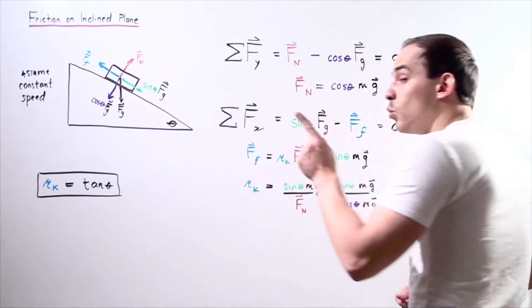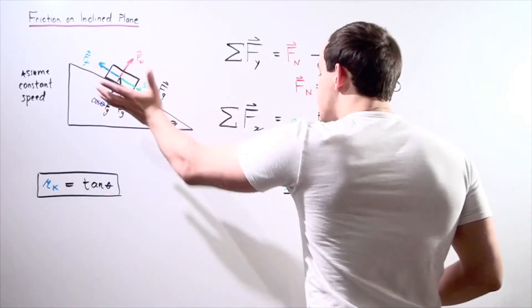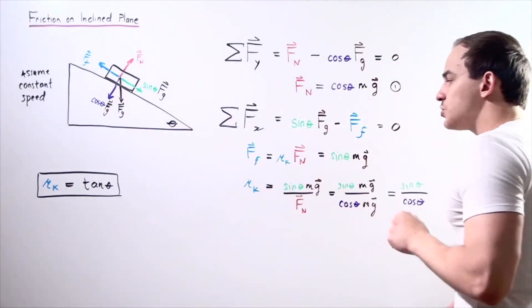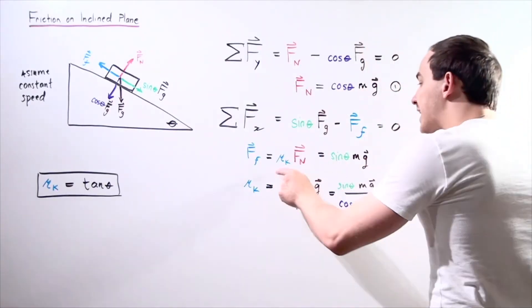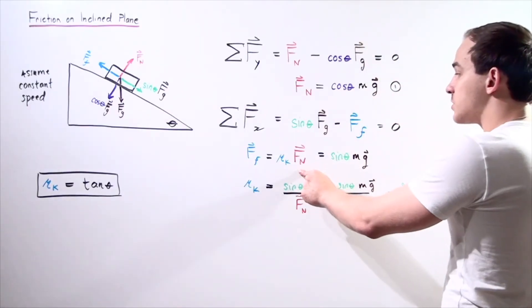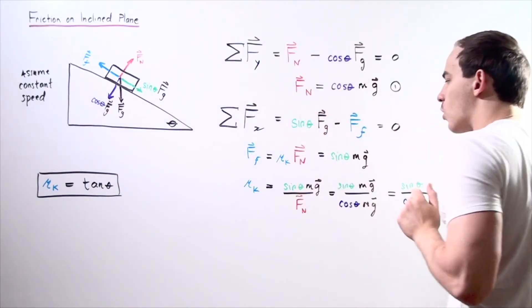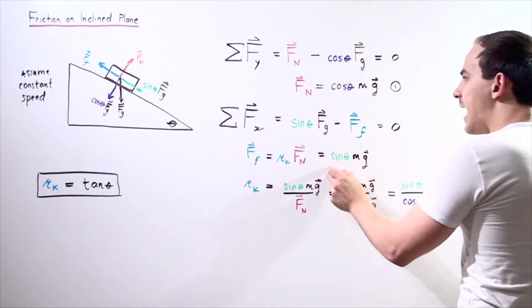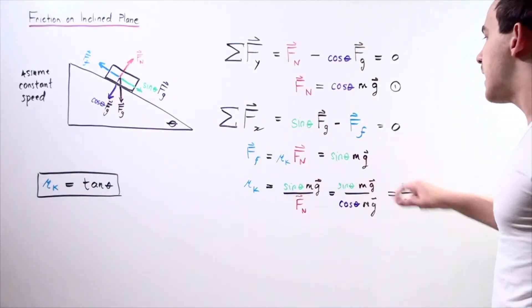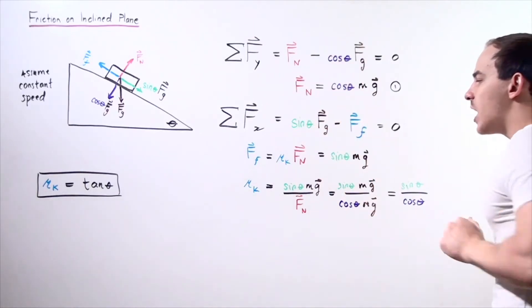The force of friction — because our object is sliding and moving — is kinetic friction. So the force of friction equals the coefficient of kinetic friction multiplied by the normal force. Setting this equal to the x-component of gravity, we have: coefficient of kinetic friction times the normal force equals sine of the angle theta multiplied by m times g, where m times g is our gravitational force on the object.